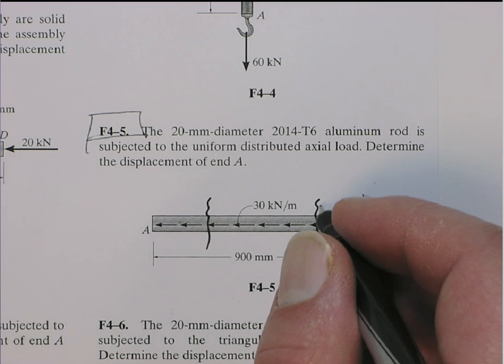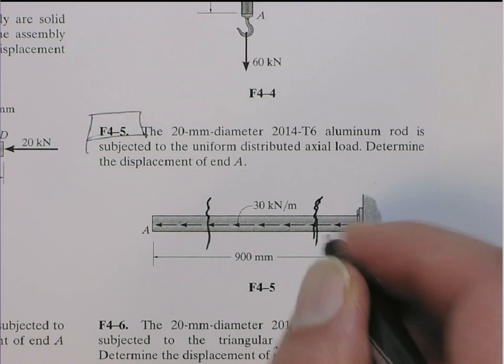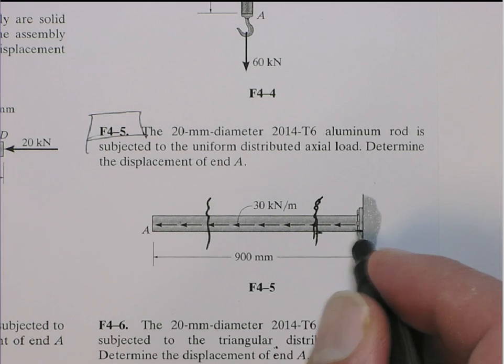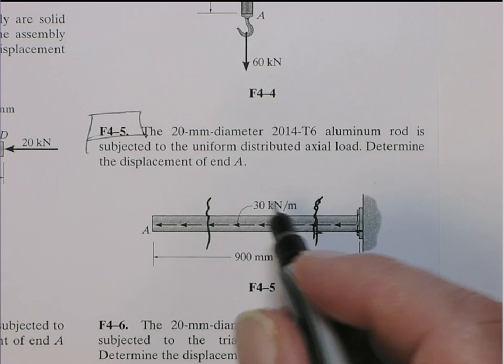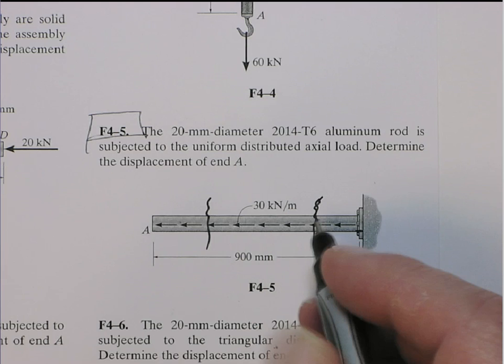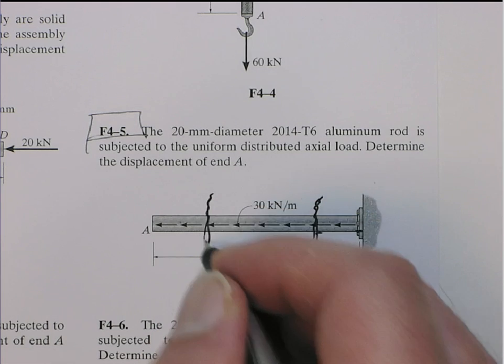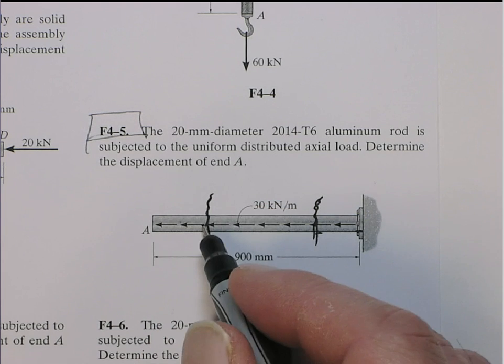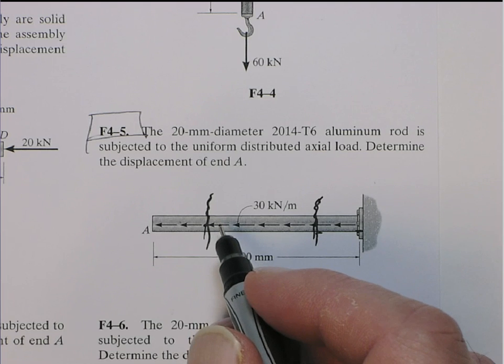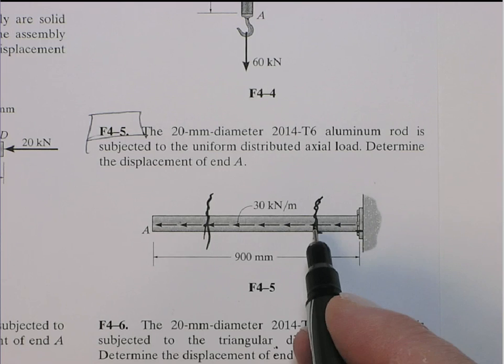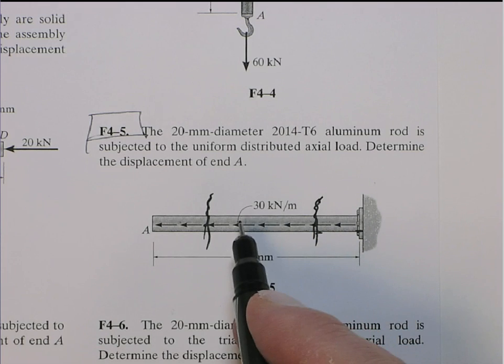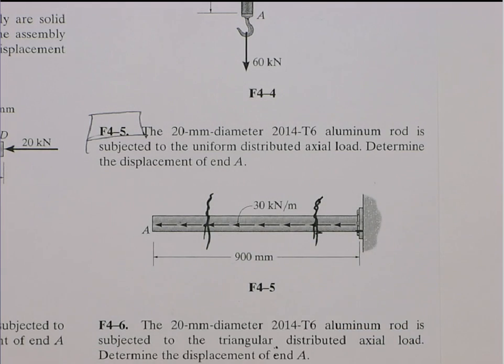You can see that pretty easily. If we look at the section from here to here, the total force acting on it is the 30 kN per meter times this length, whereas if you look at this section, at this point, it's the same 30 kN per meter but over a longer length. So as you go up further, make this cut further and further, the reaction force becomes greater.